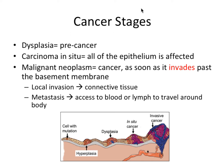Let's do a quick review of cancer stages. Dysplasia refers to pre-cancer. Carcinoma in situ is the next stage where all of the epithelium is affected. Finally, malignant neoplasm is a fancy name for cancer — that's when it invades past the basement membrane, giving it the potential to spread into connective tissue and access blood vessels or lymph vessels.